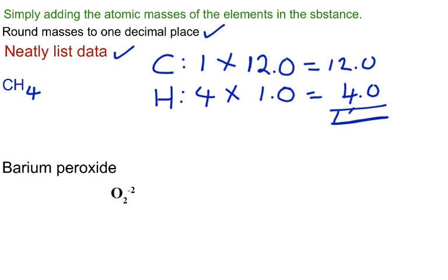So simply, we have 12.0 plus 4 times 1. 4 times 1 is 4. So we get 16.0, and the unit is grams per mole. So what we just did, we calculated the GFM of methane CH4, and you're done.